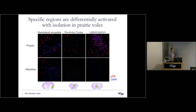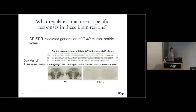Our next question is what might be mediating this differential response. We have a clue from earlier comparative studies where oxytocin and signaling through its receptor was found important for pair bonding and attachment behavior. But we haven't had any tools to actually genetically manipulate these species. Our lab has adapted CRISPR-based tools to the prairie vole system and generated some of the first animals carrying a knockout for the oxytocin receptor.